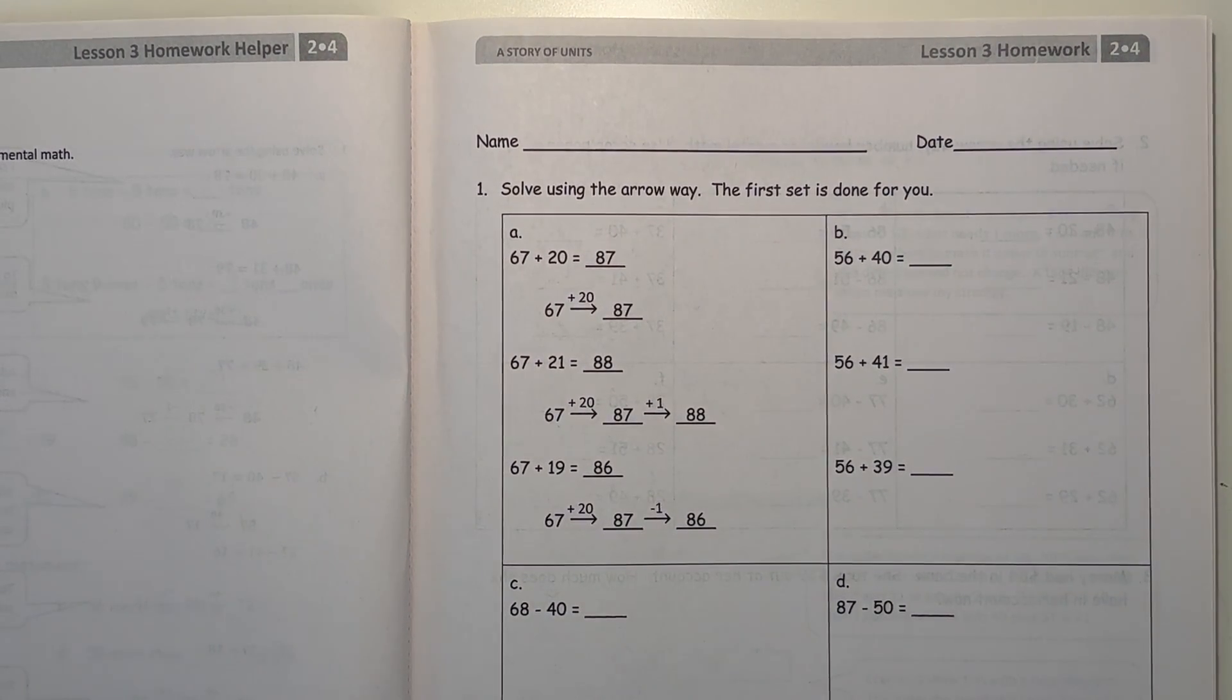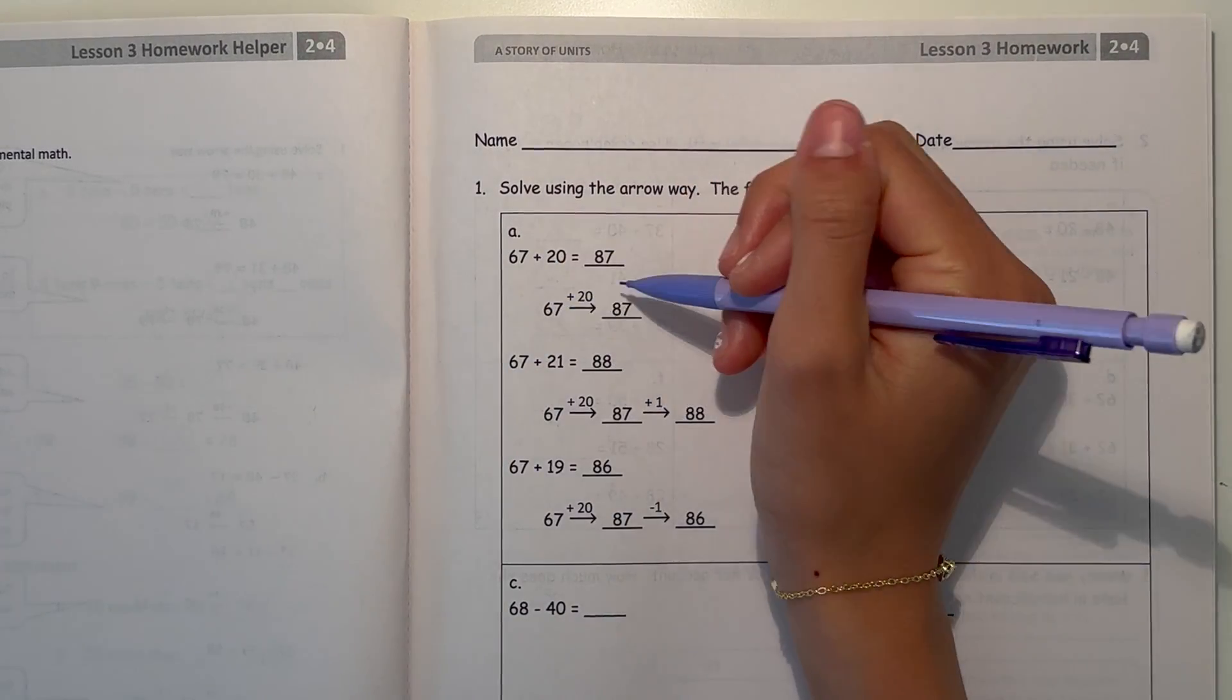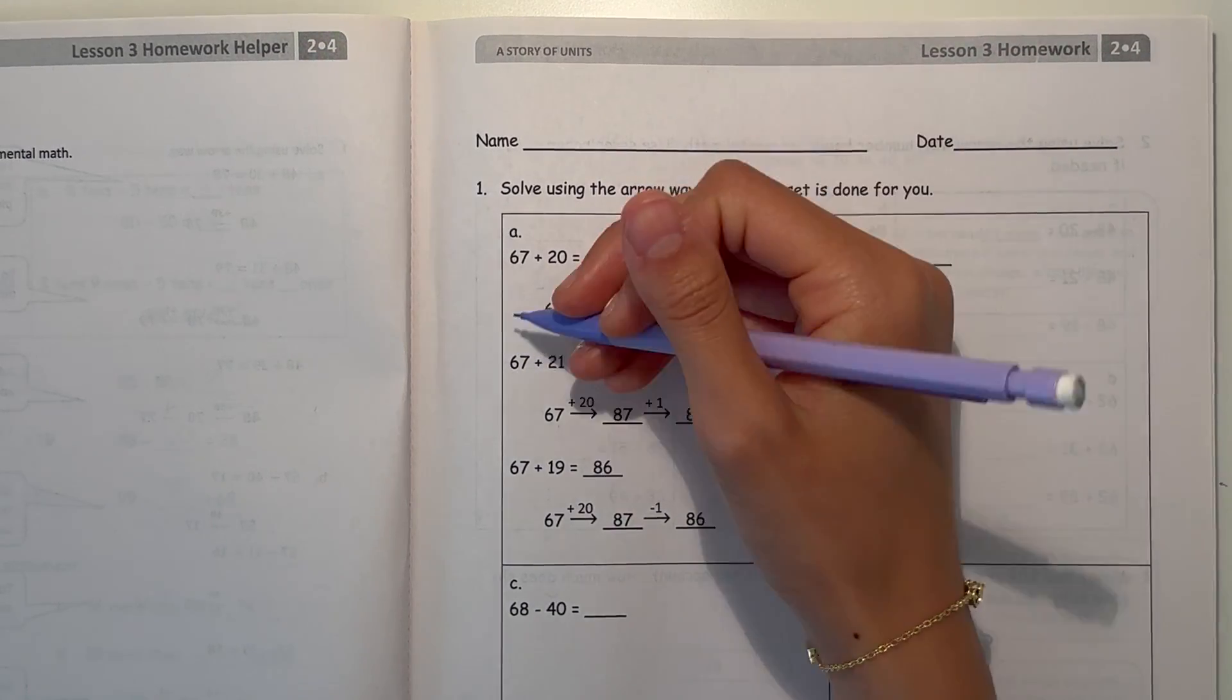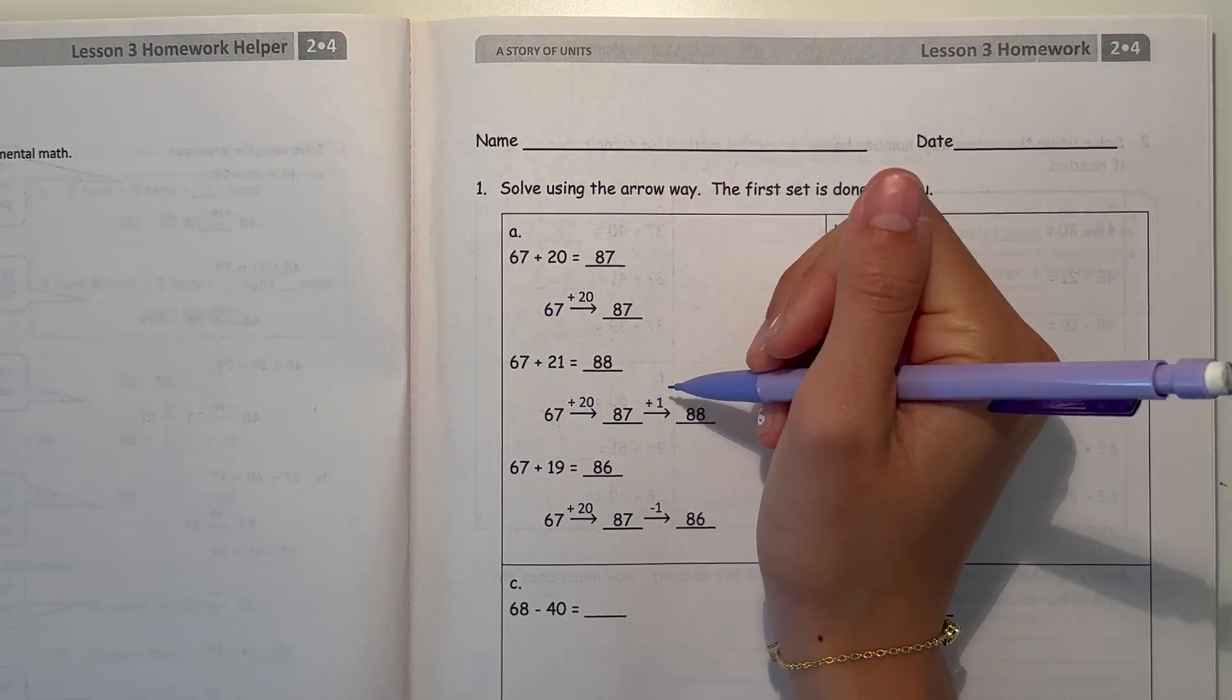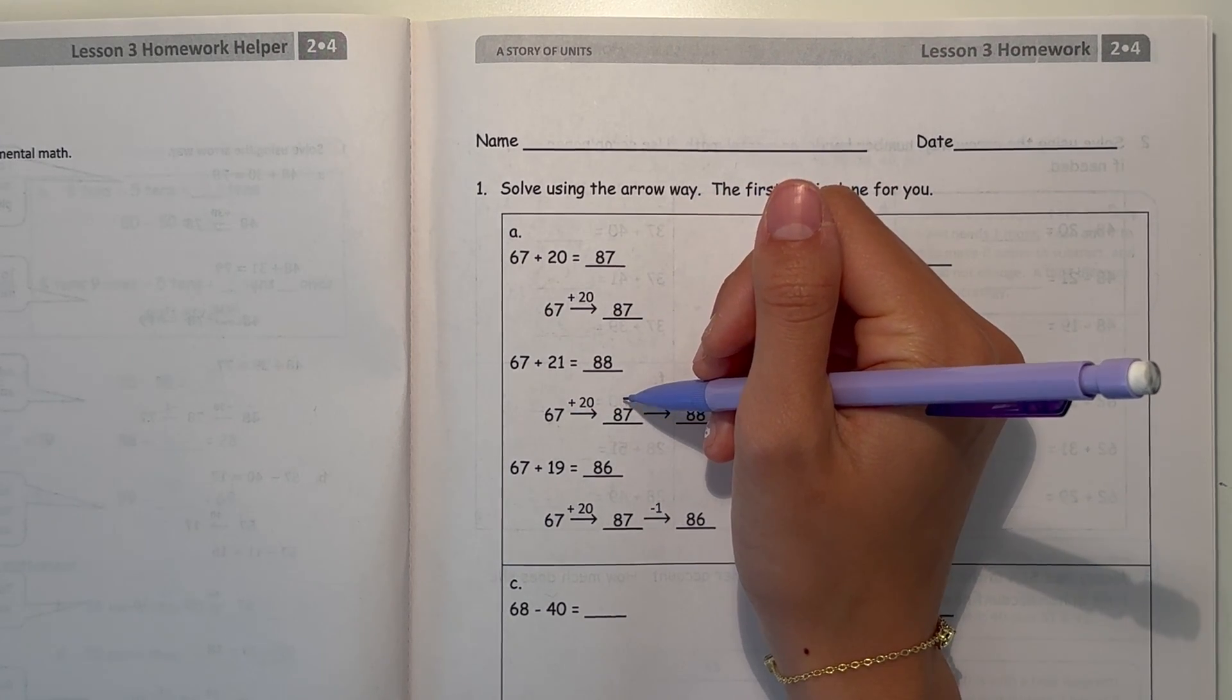Number 1, solve using the arrow way. The first set is done for you. So A, 67 plus 20. I just did it straight plus 20, which is 87. But 67 plus 21, they first added 20 and then added 1. So plus 20 is 87 and then plus 1 is 88.